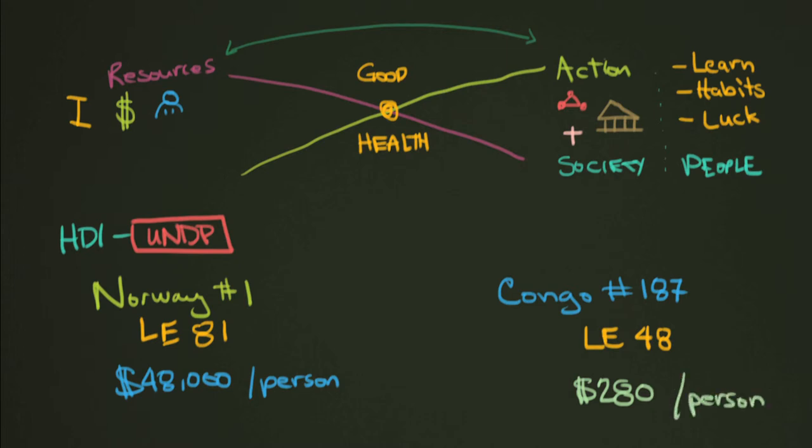Now, money isn't everything. Just because Norway is making 170 times as much money per person per year doesn't necessarily mean that Congo is in the worst position they could possibly be. Although, after years and years of war, it's obviously not easy for a country like Congo to do well and do as well as Norway. But there are a lot of solutions that could bring this 48 a lot closer to this 81 over here.